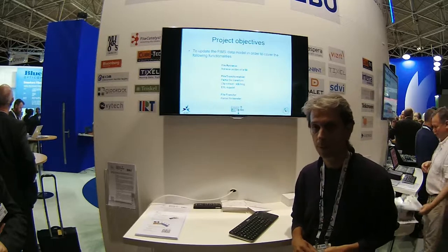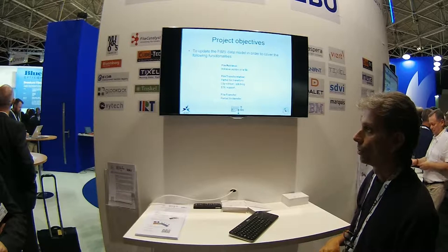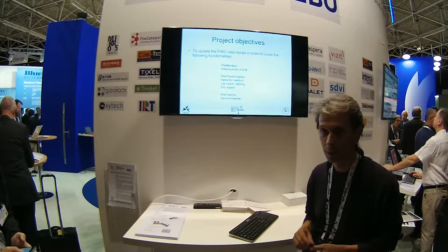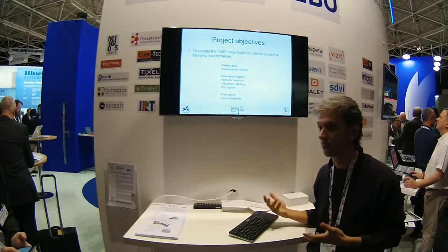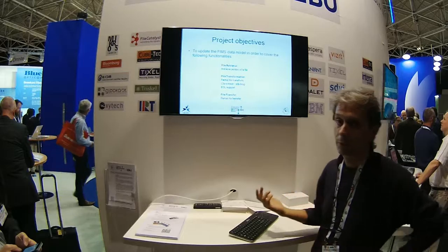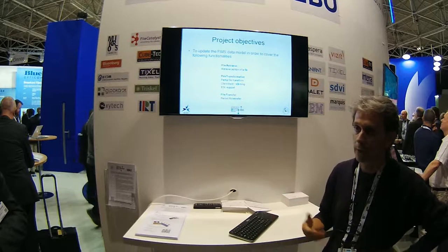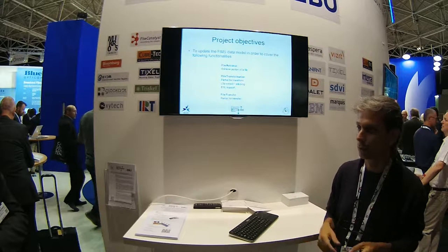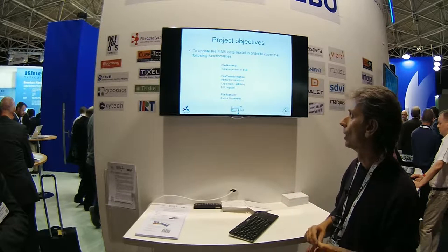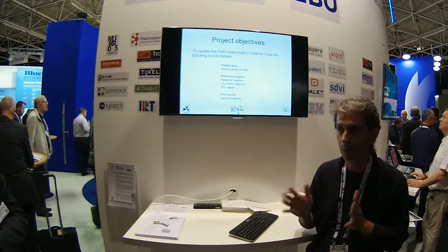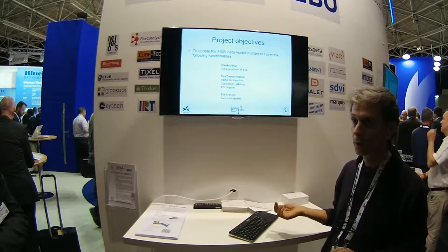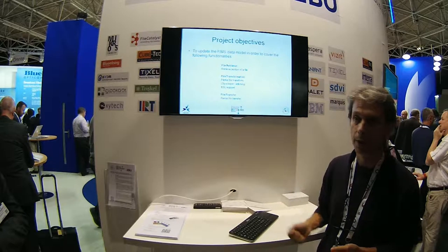The objective of this specific project about content parts is to provide FIMS the ability to process only portions of content that are already existing and available, without having to move or process the entire file. For example, you can retrieve from a repository just the first 10 seconds of a long file that may last two hours. You don't need all of it — just the head. The repository extracts that specific portion and gives it to you. The same applies to transformation: you can transcode only a small part or stitch several parts together to make new content, using existing services with just small updates to the interface.